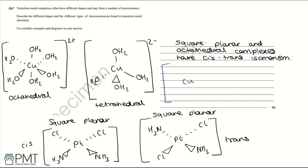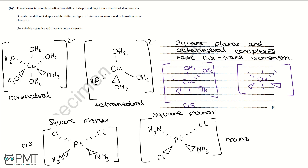For octahedral cis and trans isomerism, we draw two 3D generic octahedral arrangements — one cis and one trans. In the cis arrangement, the same ligands (e.g., water) are on the same side, with a different ligand such as ammonia filling the remaining positions. In the trans arrangement, the water ligands are on opposite sides. Both arrangements carry an overall 2+ charge, bonding through oxygen and nitrogen respectively.